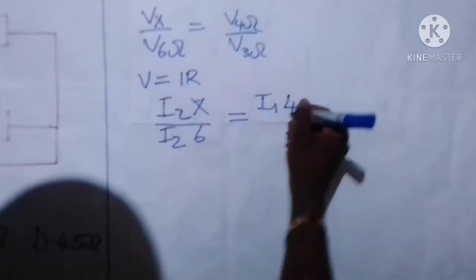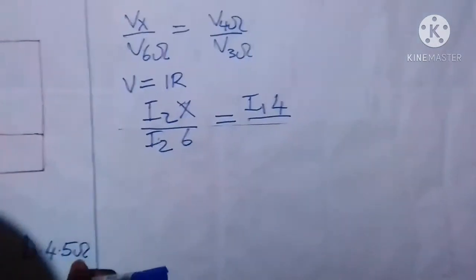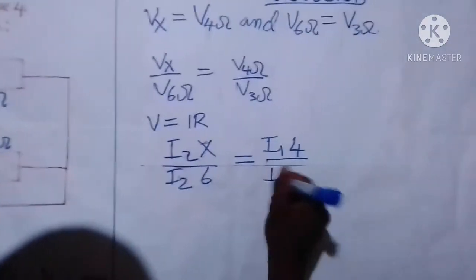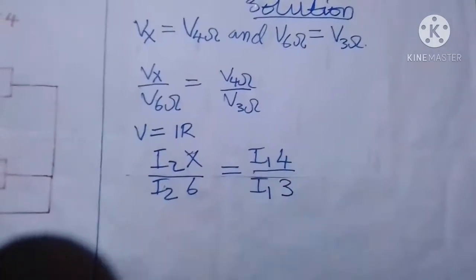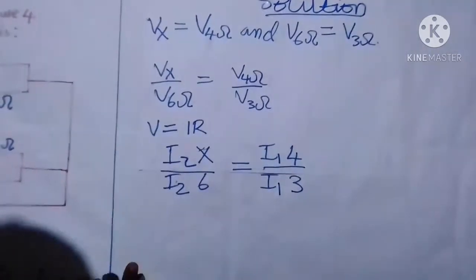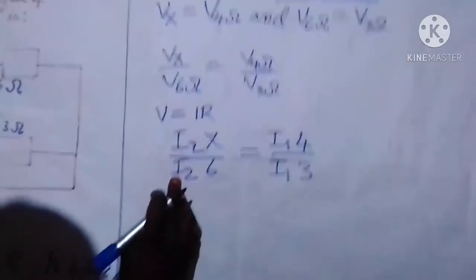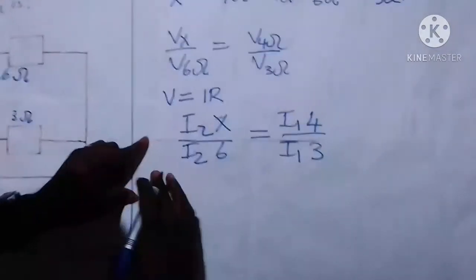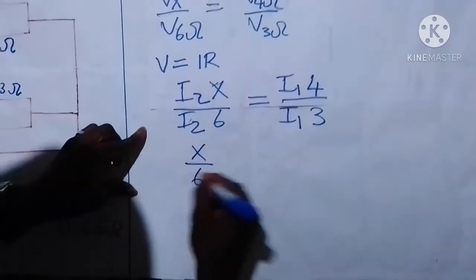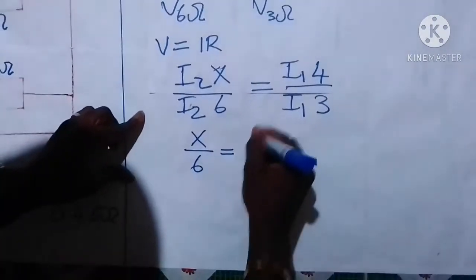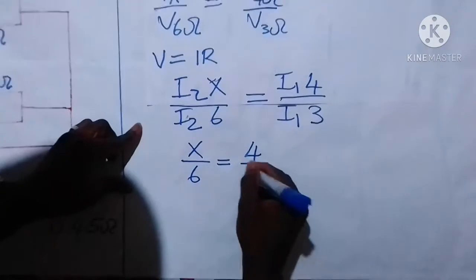Now we can simplify this. Since this I2 can cancel with this I2, and I1 can cancel with I1, we are going to have X over 6 equal to 4 over 3.